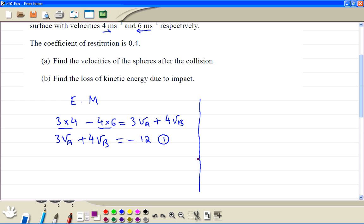This side, we write the equation of restitution. Separation speed is equal to the coefficient of restitution times approach speed. So separation speed is minus velocity of A plus velocity of B. Restitution coefficient is 0.4, and the approach speed here is 4 plus 6 is 10. So we've got velocity of A here, minus velocity of A plus velocity of B is equal to 4.